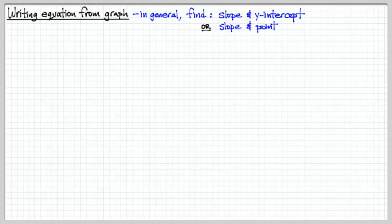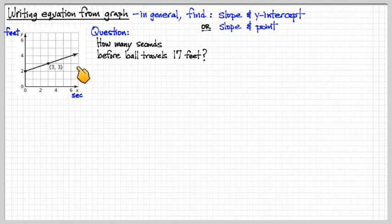Let's do an example where we write an equation given a graph. So the general method is to either find the slope and the y-intercept. This is the easiest way if the y-intercept is easily seen. Or find the slope and another point. So in this graph here, we have a question that we're posed. How many seconds before the ball travels 17 feet? So we have on this axis, time, and on this axis, feet. And the ball travels farther and farther away according to how many seconds it travels.